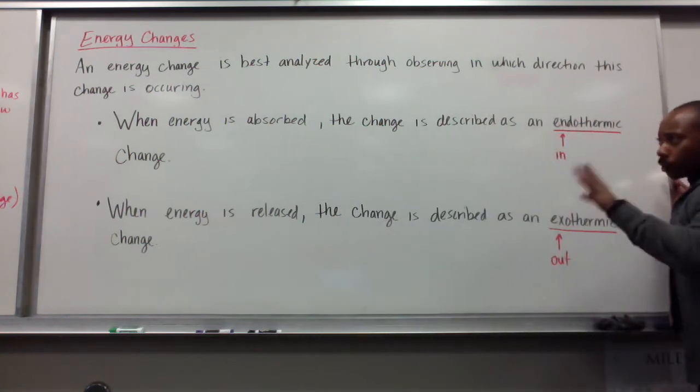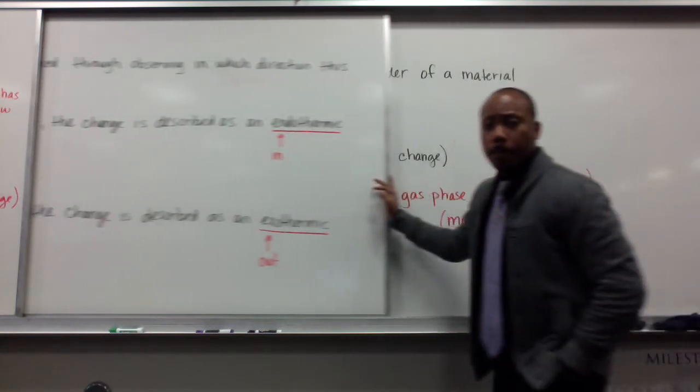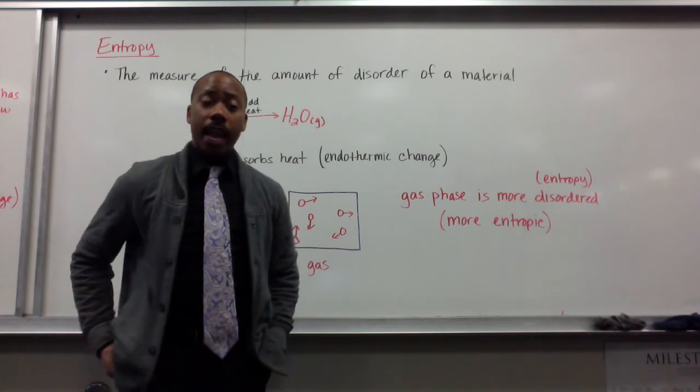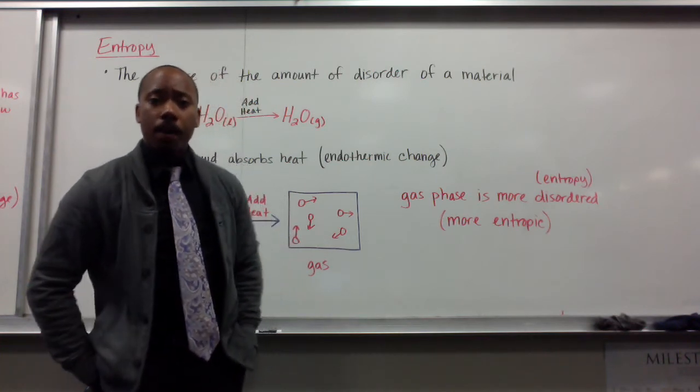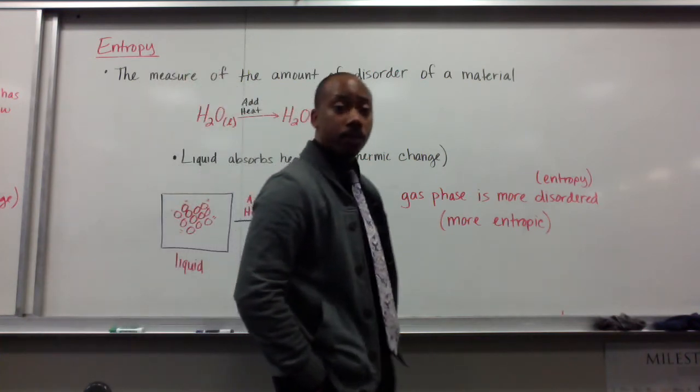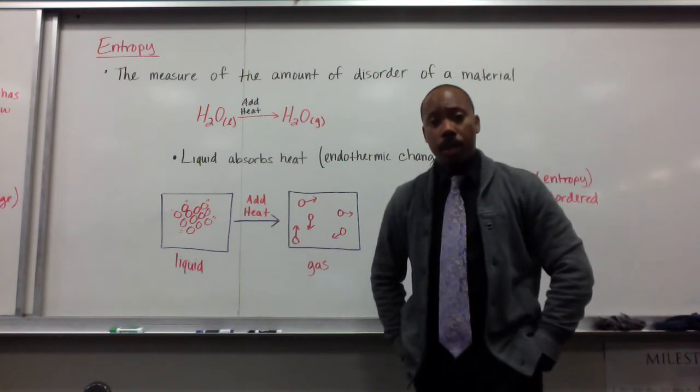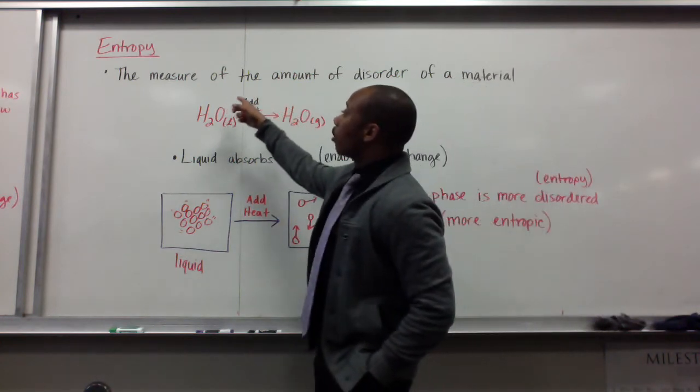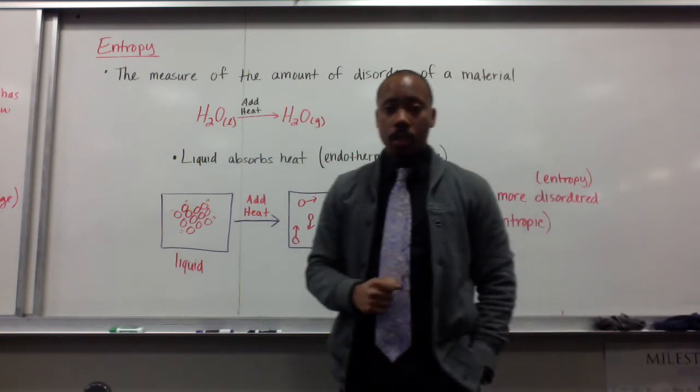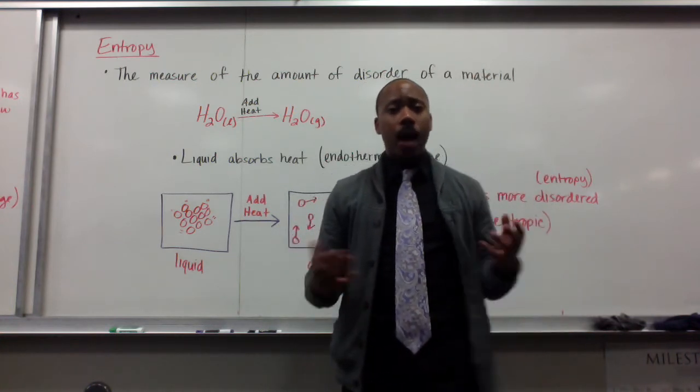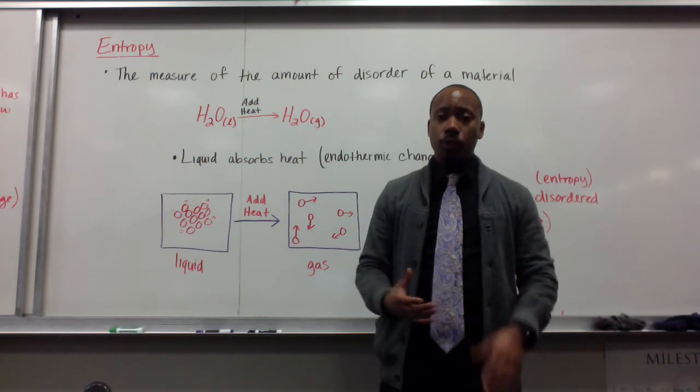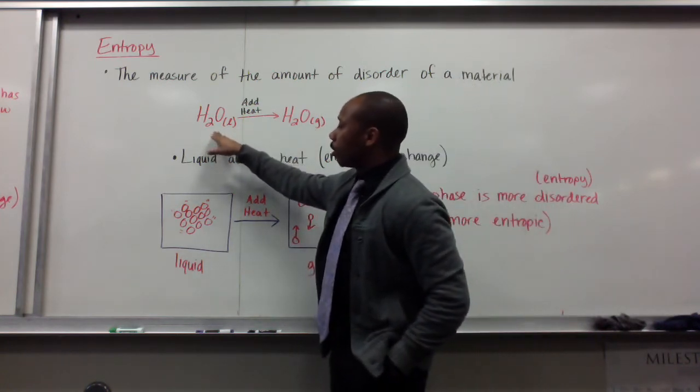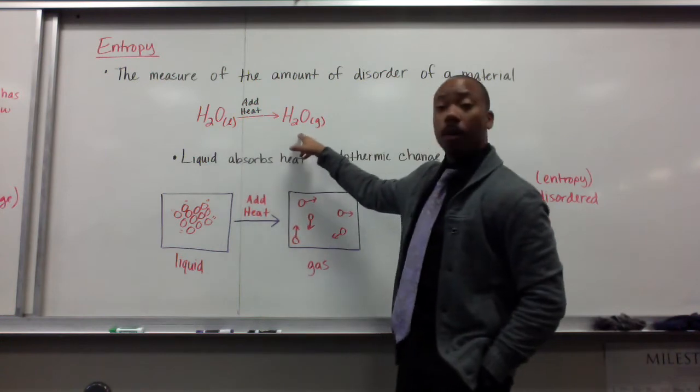Now, in our original board there, the title of our section here is energy and entropy. Let's talk about entropy and how it can be related to the concept that we know of as energy. Entropy is the measure of the amount of disorder of a material. So, just how disordered is a material? Let's use our example from the first whiteboard. We have liquid water going through a phase change to become water vapor.